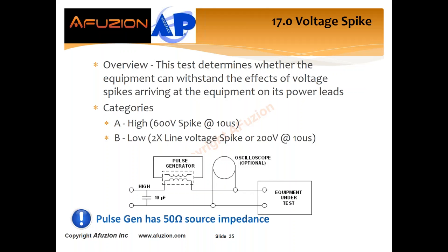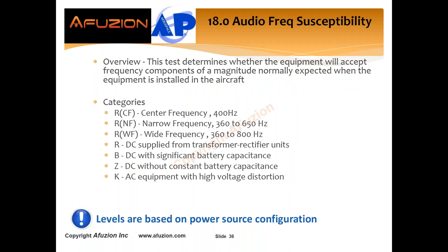Section 18 — audio frequency susceptibility — is a light voltage spike on your power lines depending on the power input to your unit under test. You'll notice similar categories to section 16 power input: center frequency, narrow frequency, and wide frequency for AC, as well as categories R, B, Z, and K for DC. Audio frequency is typically less severe than section 20 RF susceptibility, and shouldn't need to be analyzed individually.